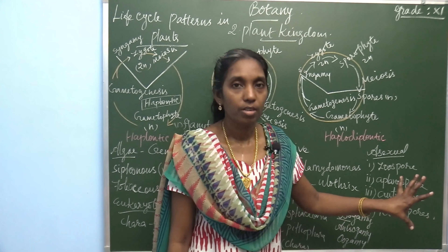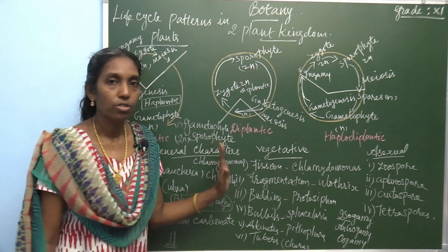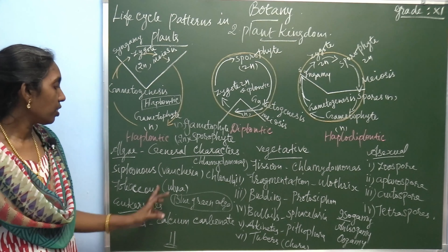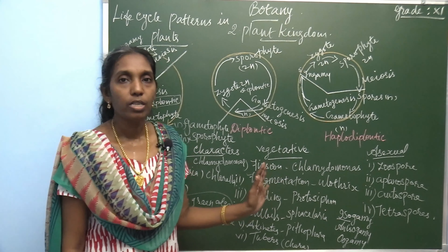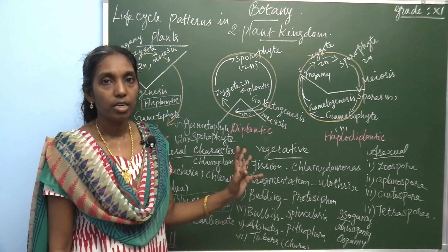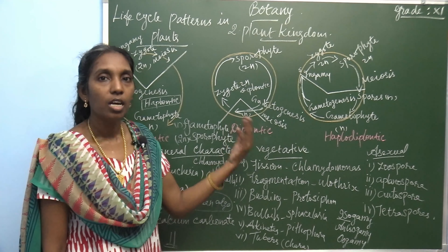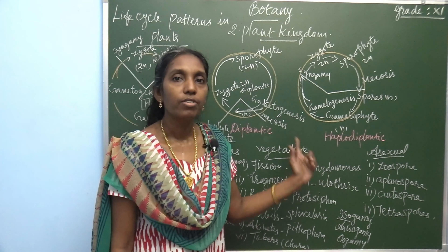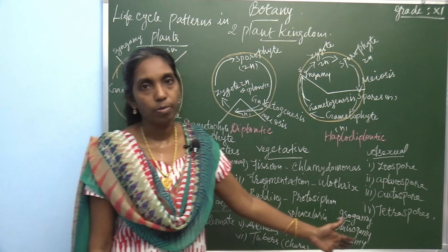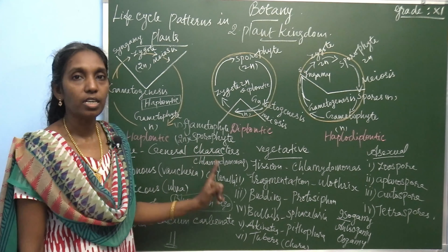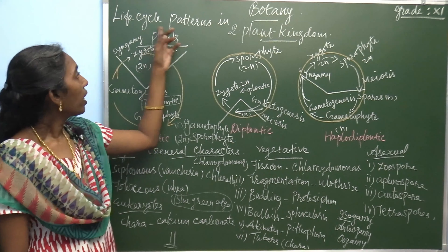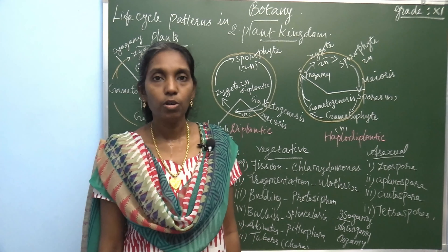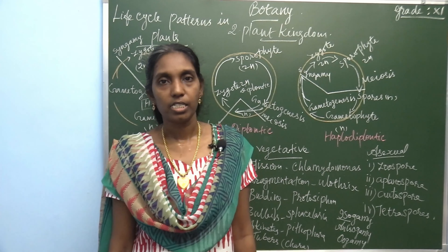So these are the three types of sexual method of reproduction. For general characteristics, write about: Thallus organization, eukaryotic cell structure, pigmentation, reserve food material, classification, and finally reproduction — vegetative, asexual, and sexual methods. Today you learnt two questions: general characteristic features of Algae, and Life Cycle Patterns in Plants — Haplontic, Diplontic, and Haplodiplontic. Learn these before the next class. Thank you.